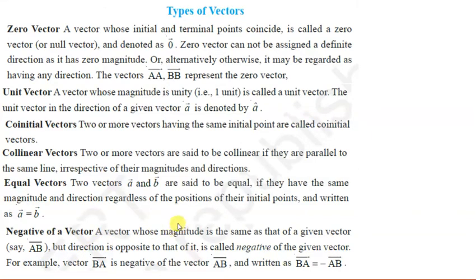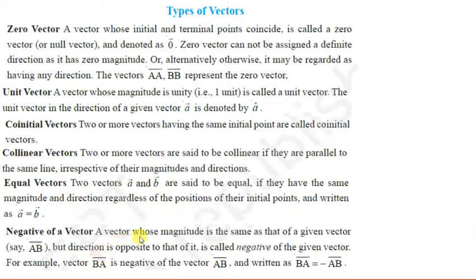Then negative of a vector. A vector whose magnitude is the same as that of the given vector but direction is opposite to that of it is called the negative of the given vector. Kisi bhi vector ka negative woh vector hoga jo magnitude mein toh equal hoga given vector ke, par uska direction opposite ho. So vector BA is the negative of vector AB. Agar humare paas vector AB hai, toh iska negative kya hoga — uska direction change ho jayega, initial point B ho jayega, terminal point A. Toh iska negative BA vector hoga. We can write: BA vector is equal to minus of AB vector.